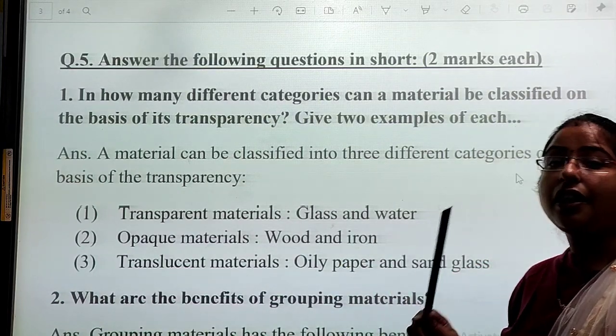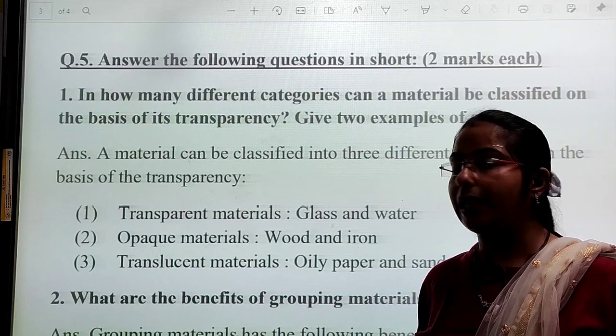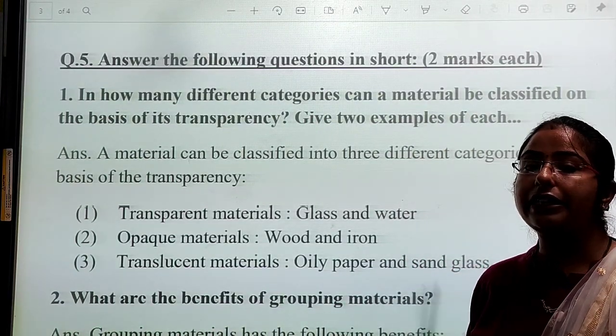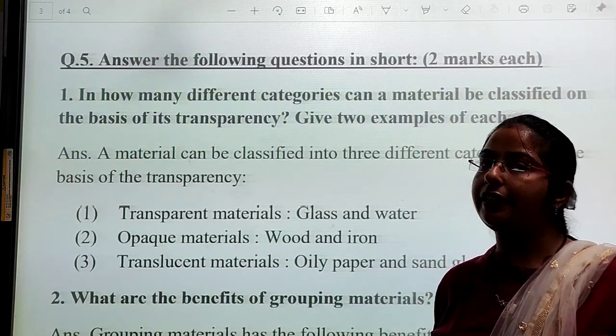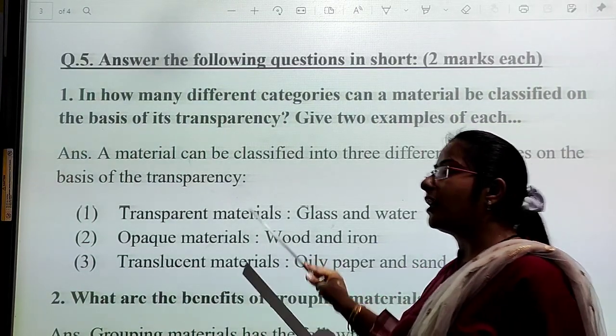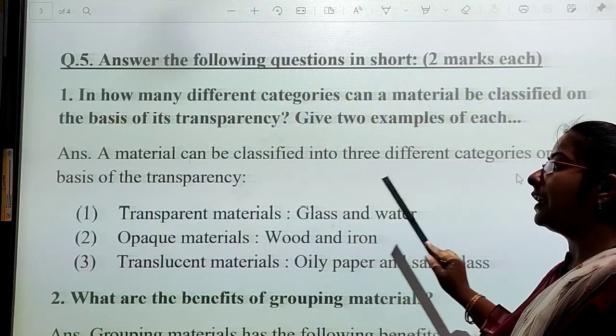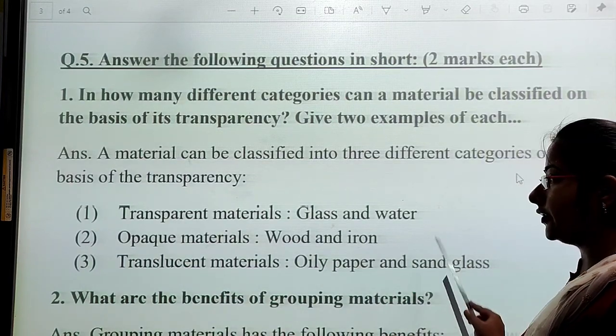Transparent material is when you are able to see the other side object very clearly. Examples of transparent material are glass and water. If you want to write any other example, you can write it down.